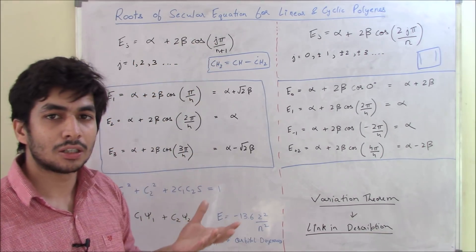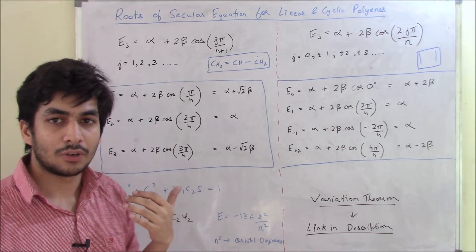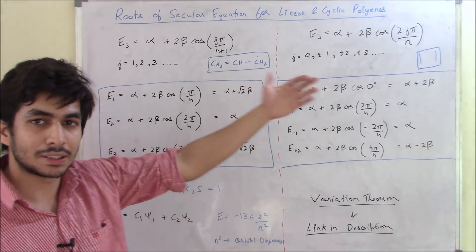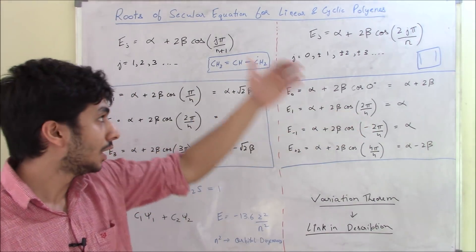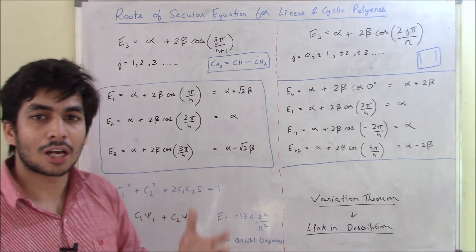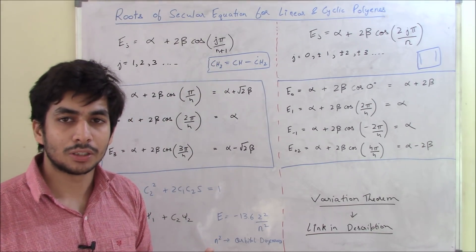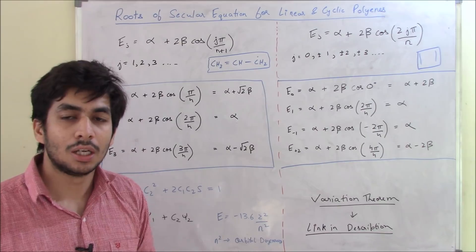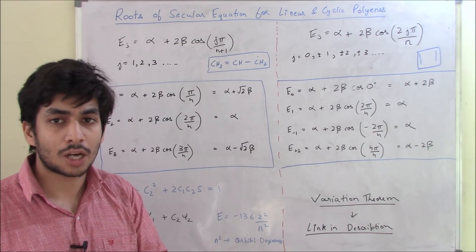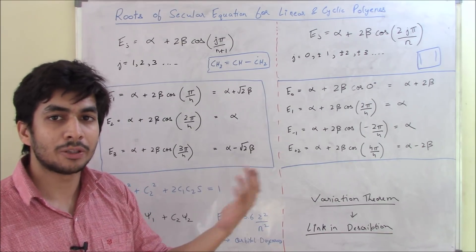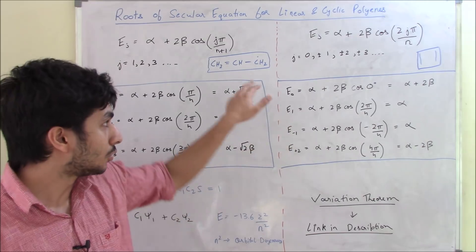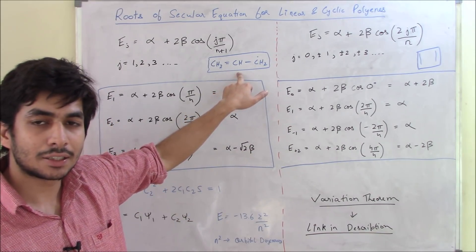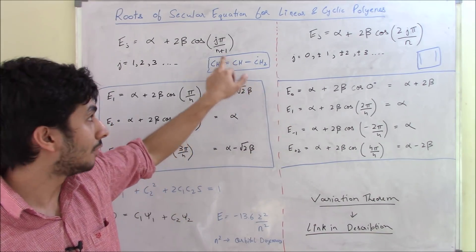Here j takes whole number values starting from 1, 2, 3, 4, 5, 6 and so on, and n is the number of carbon atoms in that particular linear polyene. For example, for ethene there are two carbon atoms so n = 2. For the allylic radical there are three carbon atoms, so n = 3.